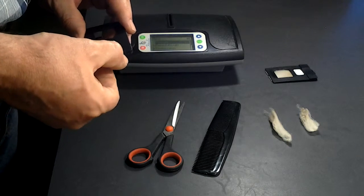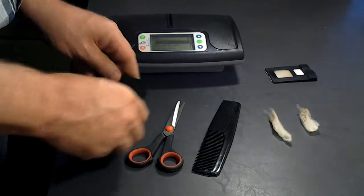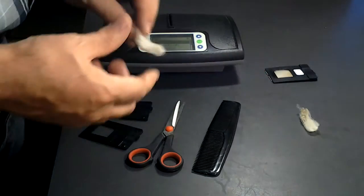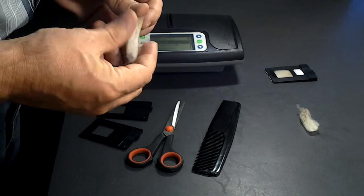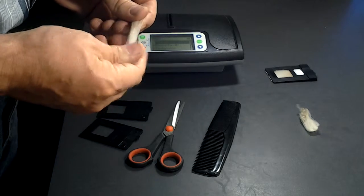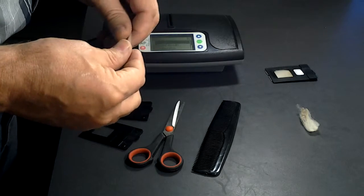First things first, open your sample holder. You need a small sample like this. For consistency, we recommend you always take it from the same place on the animal, the mid-trip sample.